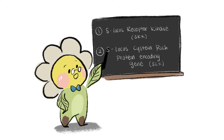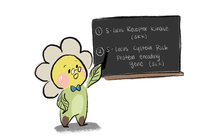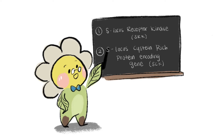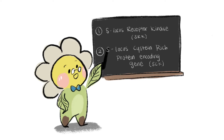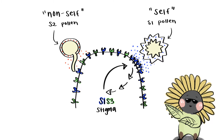Remember the S-allele that I mentioned before? Molecular studies have actually identified self-incompatibility to be caused by several tightly linked genes in the S-locus region of Brassicaceae. The two main ones are the S-locus receptor kinase, or the SRK gene, and the S-locus cysteine-rich, or SCR, protein encoding gene. The SCR protein is located on the outer coat of the pollen and is a ligand for the S-locus receptor kinase, which is located in the plasma membrane of stigma epidermal cells.